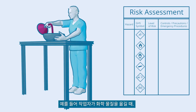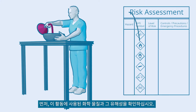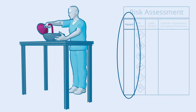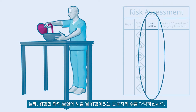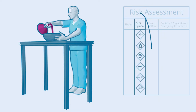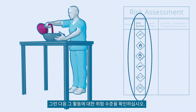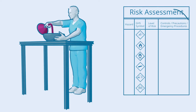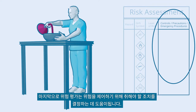For example, here when a worker transfers a chemical: first, identify the chemical substances used in this activity and their hazards; second, locate which and how many workers are possibly at risk of exposure to that hazardous chemical; next, identify the nature and level of risk of that activity. In this case, there is a high risk of splashing, which may cause skin or eye burns. Finally, the risk assessment helps to decide what actions to take for controlling the risk.